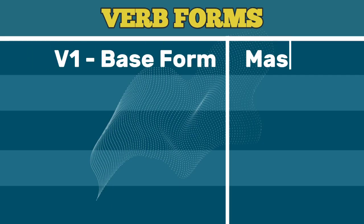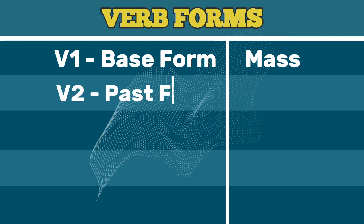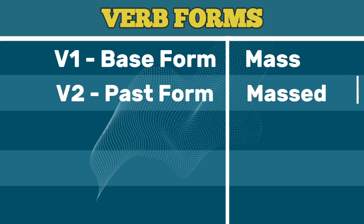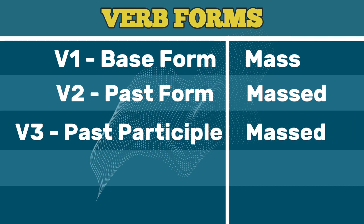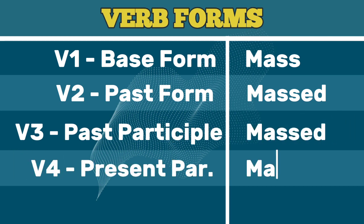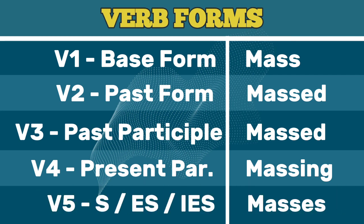V1 base form: mass. V2 past form: massed. V3 past participle: massed. V4 present participle: massing. V5 third-person singular series: masses.